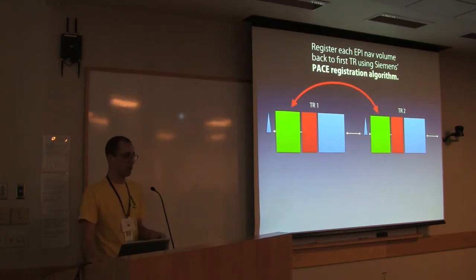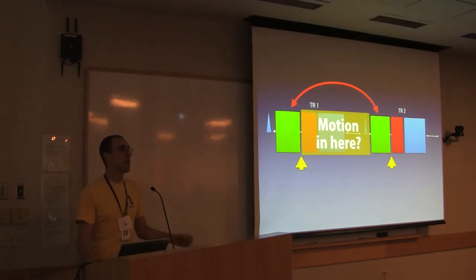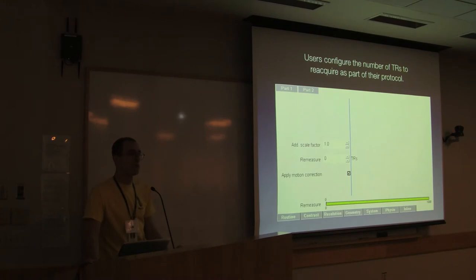We're registering during each TR. Each TR is two to three seconds depending on the sequence you're running. We take a navigator and we register it back to the first one. The instant when we have exactly right coordinate spaces is immediately after the navigators. That's when I've got my coordinates exactly right. But what if the person moves in all that huge gap in between? Well, we don't see that motion during that time. We're blind to that motion. We can't correct it. We can only correct for the frequency of every two or three seconds. That leaves us vulnerable to motion in there. What we do is we reacquire those motion damaged TRs. We can detect that the person moved in there because they're in a different position when we reached the end of that block than they were at the beginning.